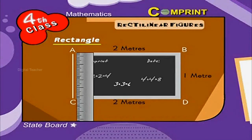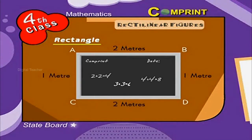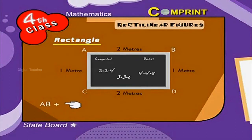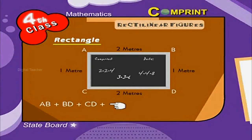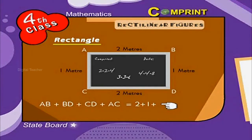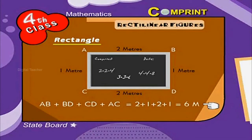Now let us add the measurements: AB plus BD plus CD plus AC is equal to 2 plus 1 plus 2 plus 1, which is equal to 6 meters.